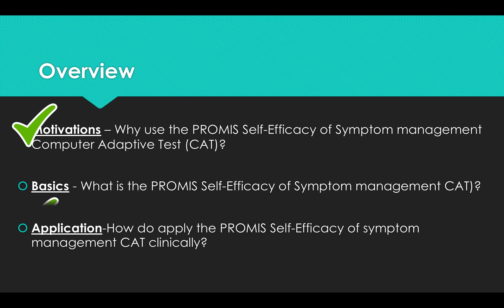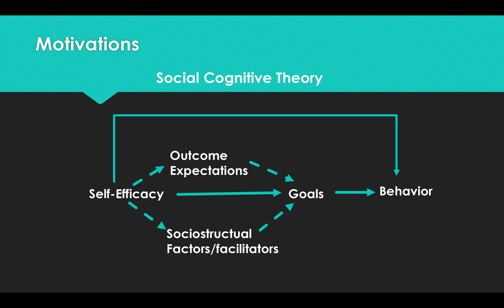Now let's move to application. But before we do, let's review some of the tenets of this model so we can see how the therapists are using it in their clinical practice. Self-efficacy is confidence and belief. It's modified by outcome expectations. Sociostructural factors and facilitators can be really important to facilitating goals and building self-efficacy, with the final goal of behavior change. If you listen carefully, you'll find all of these represented in the different video vignettes.